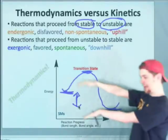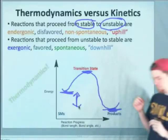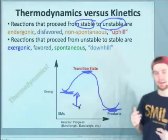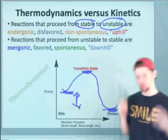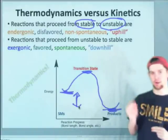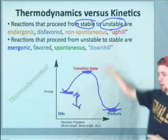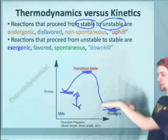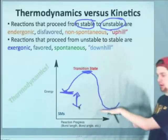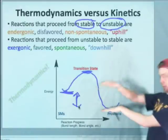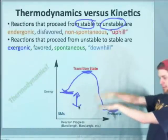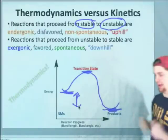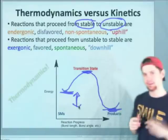This energy gap here actually controls the amounts of products and starting materials that we would see under what's called equilibrium conditions. Under conditions where the starting materials and products are allowed to get over the transition state very rapidly, then essentially there will be more of the lower energy compound than the higher energy one. And their relative amounts will depend on the size of this gap. The larger the gap, the more the lower energy compound will have. So that's thermodynamics. It deals with amounts.